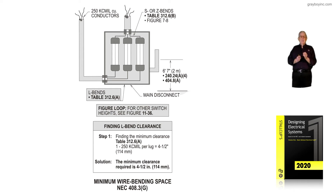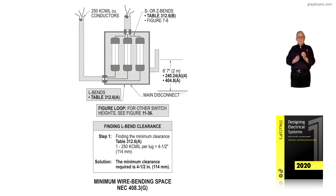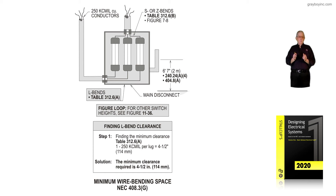NEC 404.8A covers the 6'7" rule we're looking at. If we are finding the clearance requirements in inches for the L-bend, we go to table 312.6A, and one 250 KC mil per lug is 4½ inches. So in the solution, the minimum clearance required is 4½ inches. Many times an inspector will go to 110.3A3 to deal with this minimum bending space, and it has to be provided in all enclosures, panelboards, and so forth.